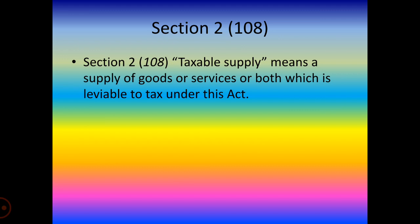As per Section 9 of the CGST Act, levy and collection — subject to a few provisions, a tax called the Central Goods and Service Tax is levied on all intrastate supplies of goods or services or both, except on the supply of alcoholic liquor for human consumption, on the value determined as per Section 15, at a rate not exceeding 20%, as notified by the government on the recommendation of the GST Council. The tax shall be collected in the prescribed manner and shall be paid by the taxable person.